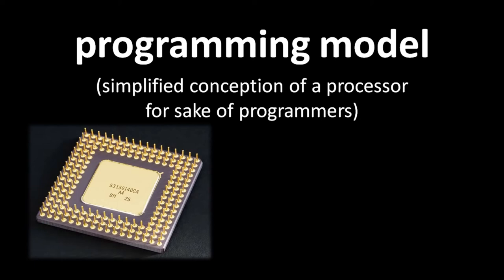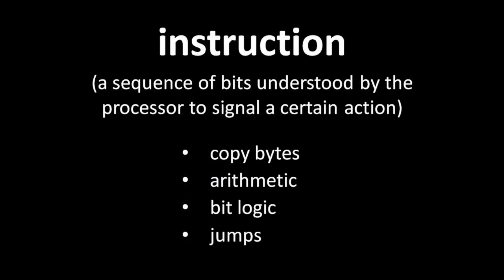What a CPU does from the programmer's perspective is execute binary instructions, which are sequences of bits, typically around 8 bits in size on the low end and around 256 bytes in size on the high end, with most somewhere in between. The way to think of these instructions is that the CPU is hardwired to read one instruction after another and hardwired to act upon each instruction differently. For example, if the binary sequence 10110011 denotes the start of an addition instruction, the CPU is hardwired to perform an addition operation when it reads an instruction starting with that sequence.